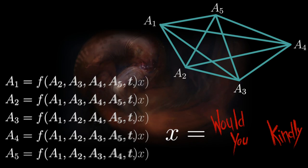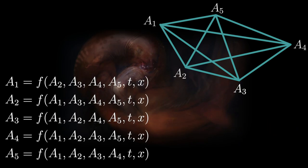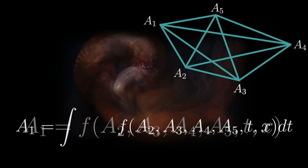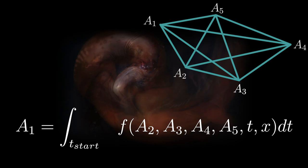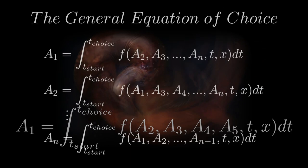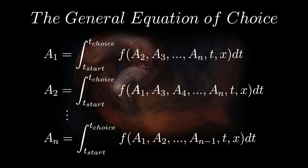So, let's introduce external stimuli to the equation system. Now, to get the choice as the output, we will have to integrate over the time it takes to make a choice. We start integrating when the choice process begins, and integrate until a choice is made. Now, the time it takes to make a choice is also dependent on parameters inside the integrals, but let's keep it super simple for now. So, now we have a generalized equation of choice.